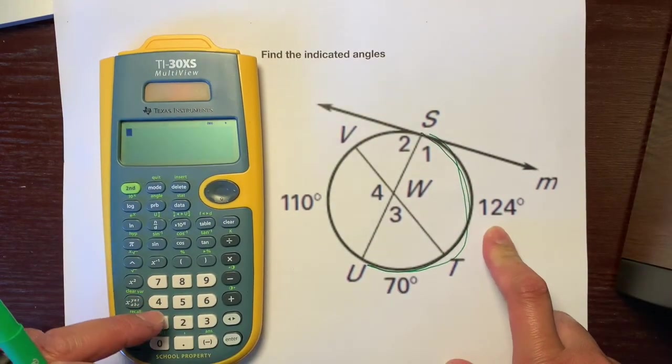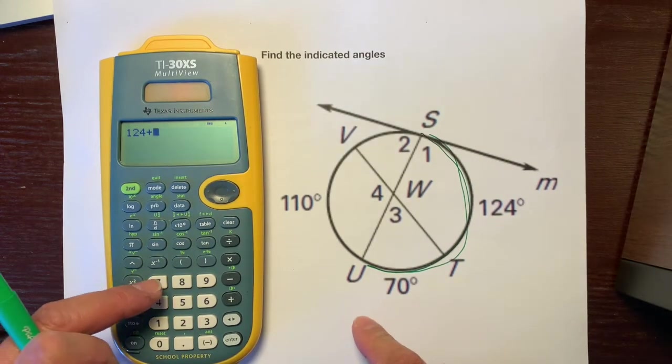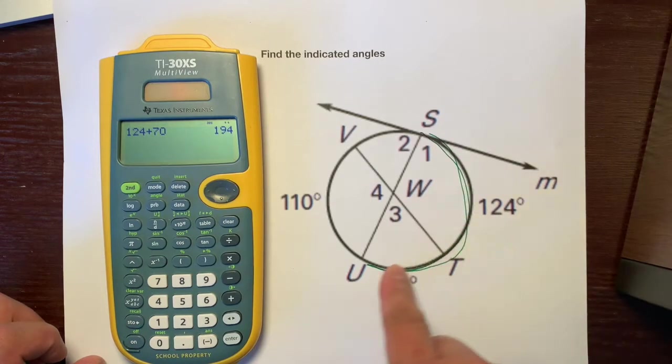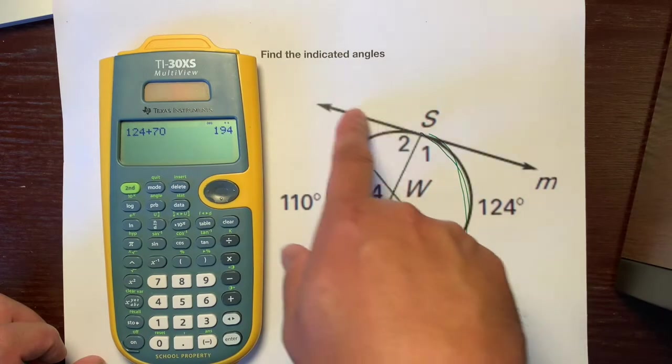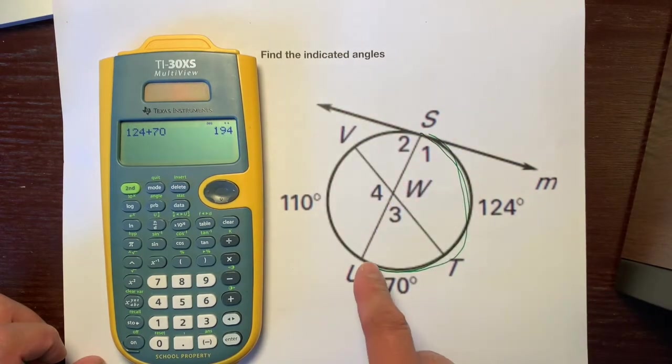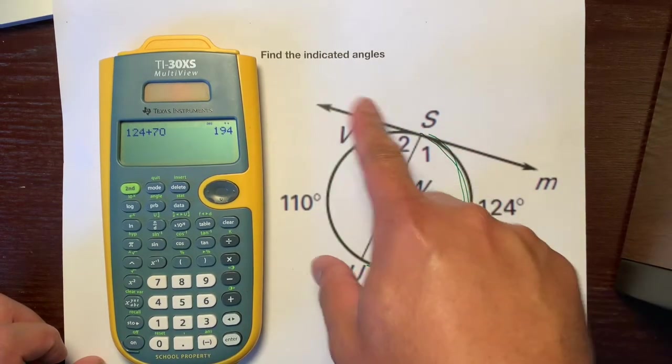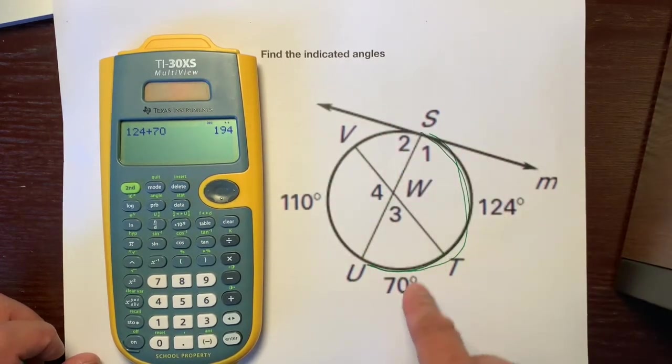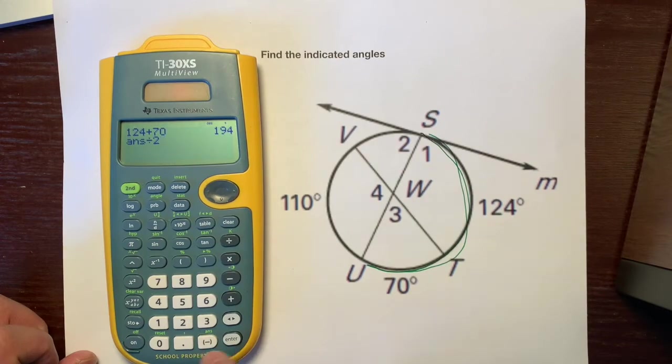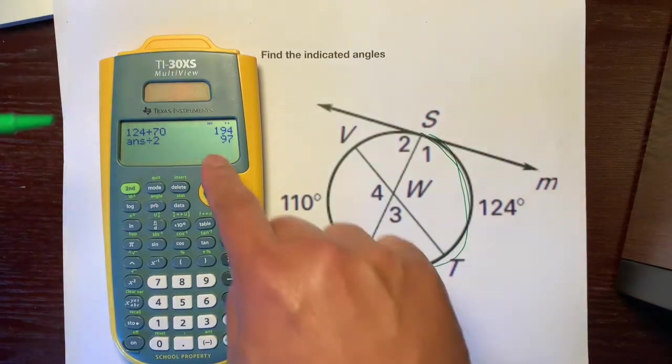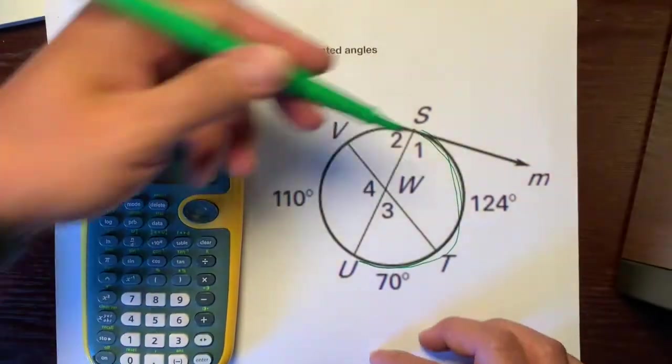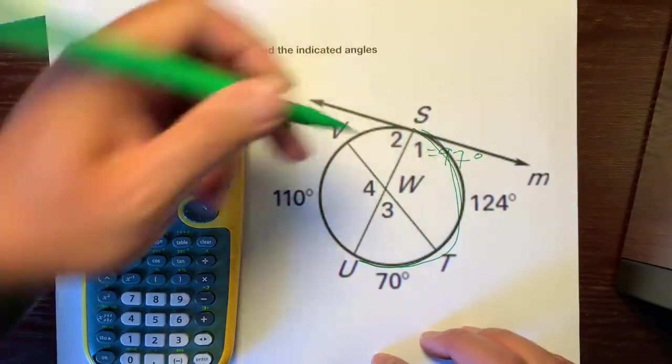Use our trusty calculator: 124 plus 70 which is 194. So this arc is 194, but remember the angles that are made by lines are half the measure of the arc because a line and a circle are half, so the line's half. We're going to take this 194 and divide it by two and find that it's 97 degrees. So angle one is 97 degrees.